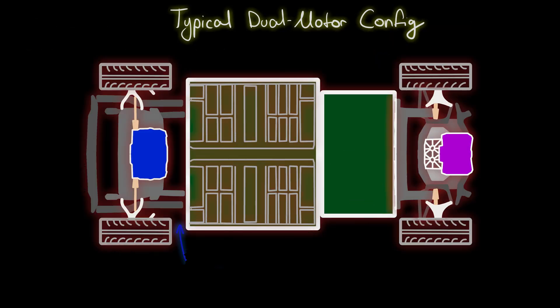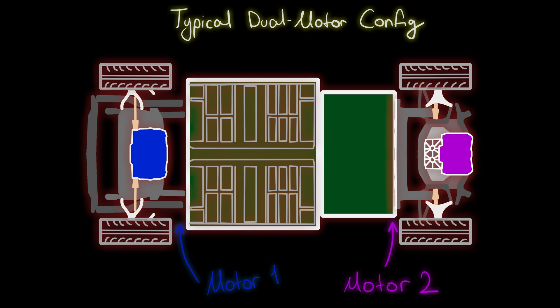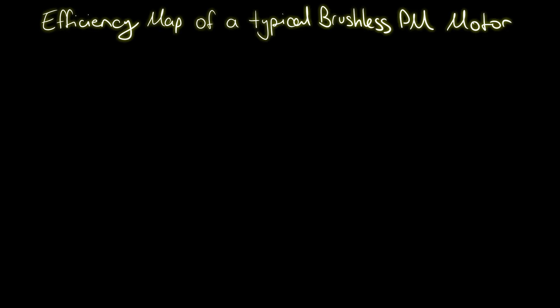Another solution most manufacturers employ is the usage of motors on both axes, and even on each of the wheels, to increase the drivetrain efficiency. Now I hear you ask, how does that solve anything? It is pretty clever, actually.